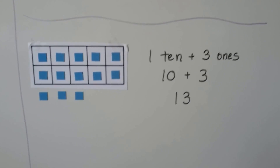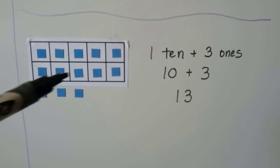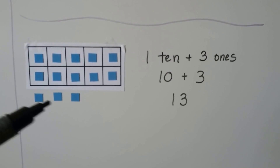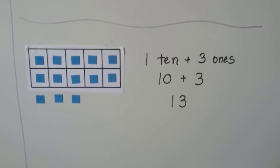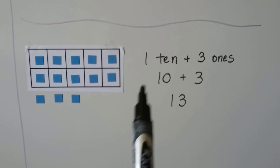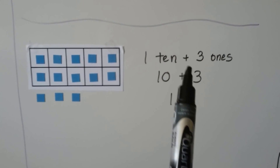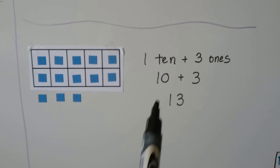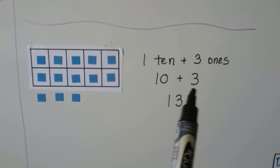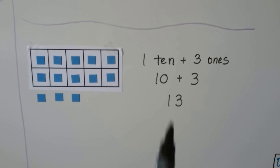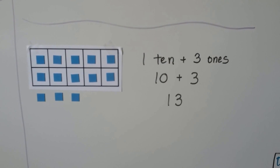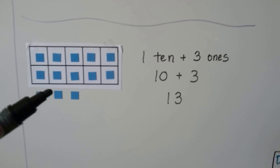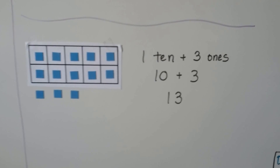Here we have a full 10 frame, so that's 10. And we have three ones — 1 ten plus 3 ones. 10 plus 3. That's 13. 10, 11, 12, 13.